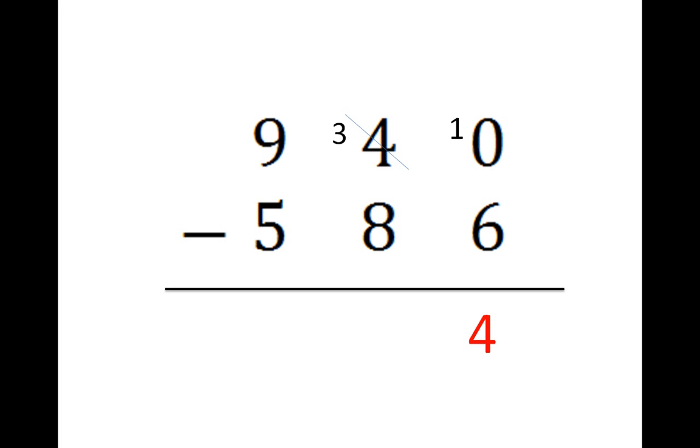8 tens from 3 tens we can't do, so we go to the hundreds. Now we have 13 tens. 13 minus 8 is 5. 8 minus 5 is 3.